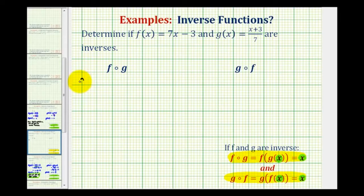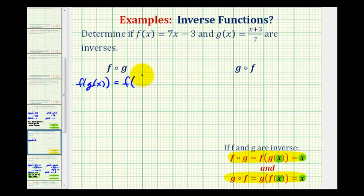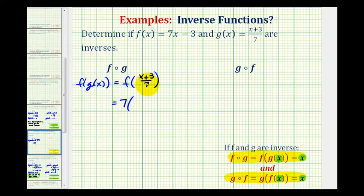So for f of g, we'll write f of g of x. Since g of x is the inner function, and g of x is equal to the quantity x plus three divided by seven, we'll have f of the quantity x plus three divided by seven. This will become the input into function f, where f of x equals seven times x minus three. So this would be equal to seven, and now the input is this fraction, x plus three divided by seven, minus three.